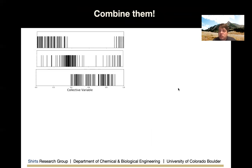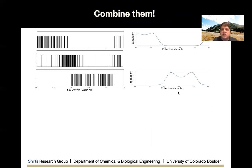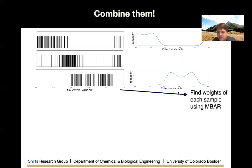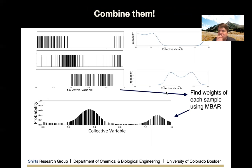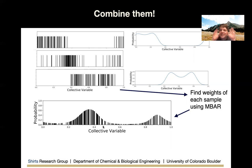The first step is to weight each observation. We find the weights of each sample using MBAR. What we get out is a fascinating distribution, because it encodes information about the probability of the collective variable in two ways: both the density of samples and the weights. Where sampling is a little lower, the curve goes a bit lower than the weight, encoding two types of probability density simultaneously.